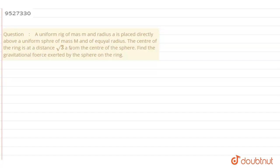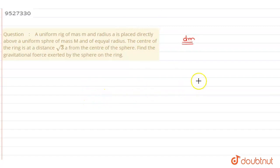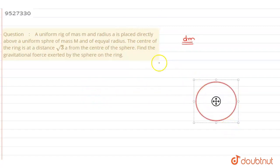We consider a small elemental mass dm. df is the force on a small mass dm of the ring by the sphere. So we consider a small elemental mass dm of the ring. Let us draw that first. This is the sphere, and on the top of the ring I consider an elemental area of the ring.